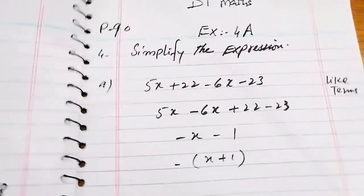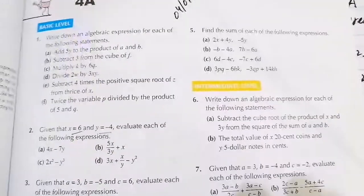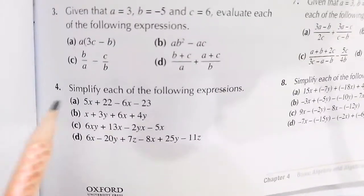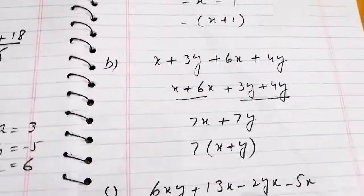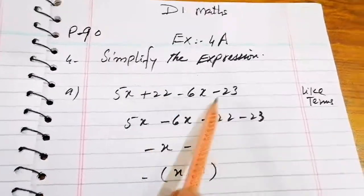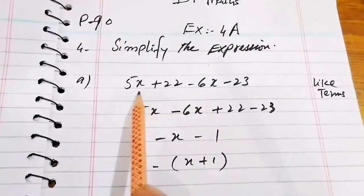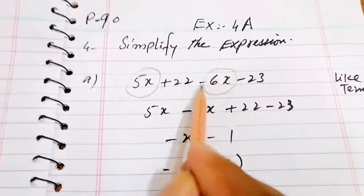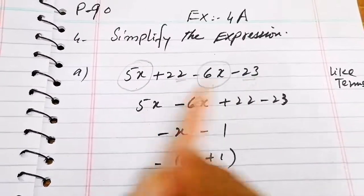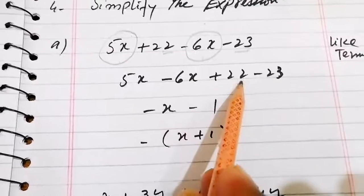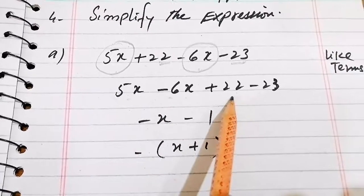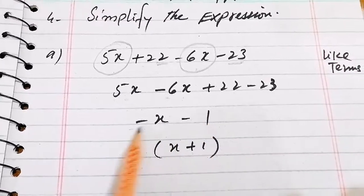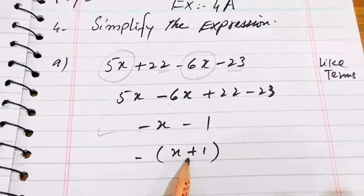Question number 4: simplify each of the following expressions. For part (a), 5x plus 22 minus 6x minus 23: we identify like terms — 5x and minus 6x are like terms, and 22 and minus 23 are constants. Writing them together: 5x minus 6x plus 22 minus 23 gives minus x minus 1. You can also factor out minus 1 to write it as minus(x plus 1).